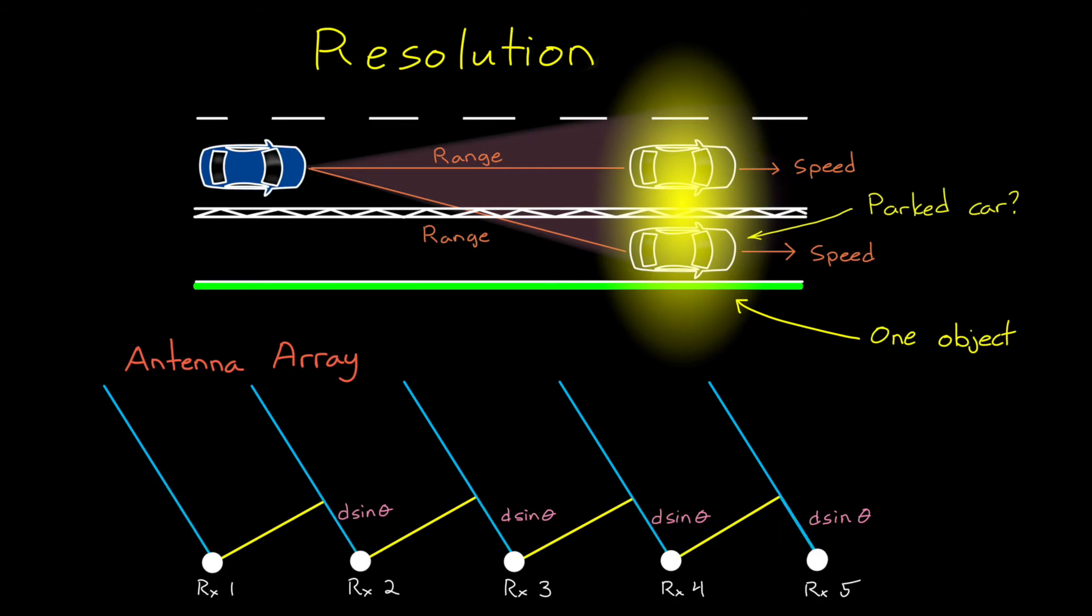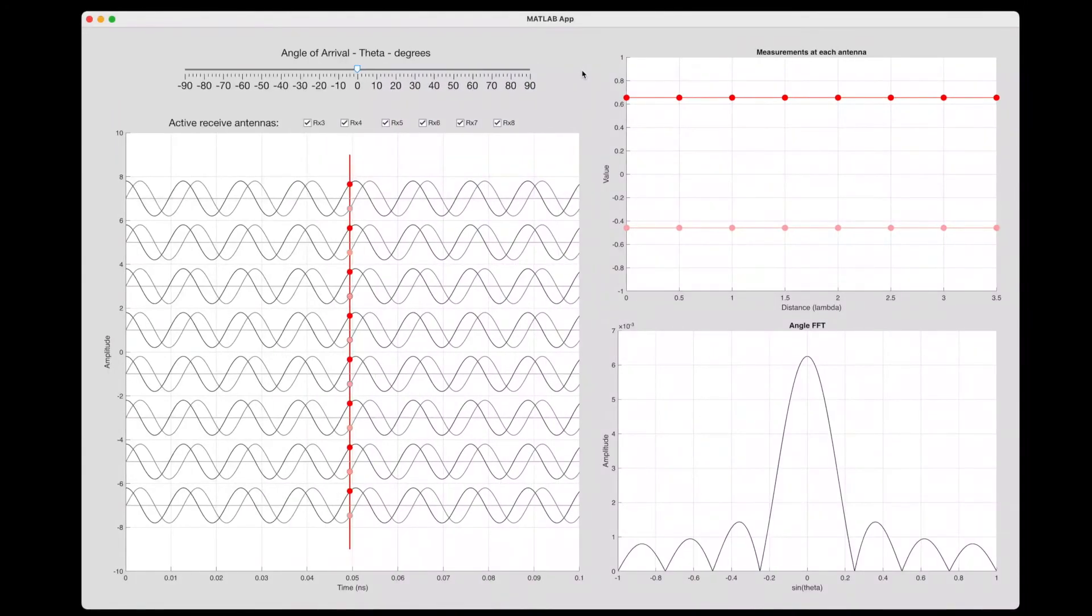Now the signal has to travel an extra d sine theta farther to each one, and therefore the delay to each antenna is more as we move across the array. So how does this improve resolution? Well, I think showing it is going to be a lot easier with a simple MATLAB app that I made.